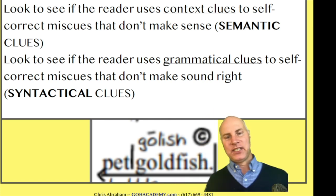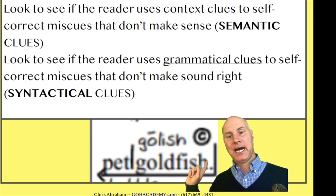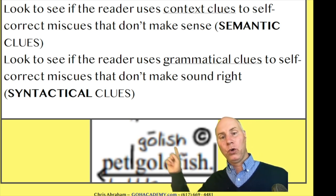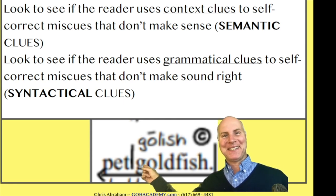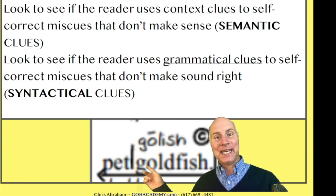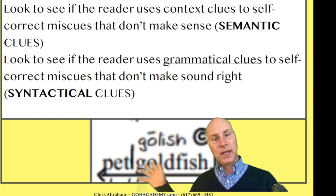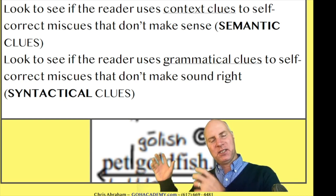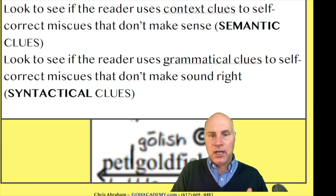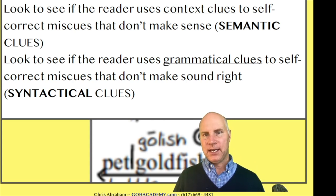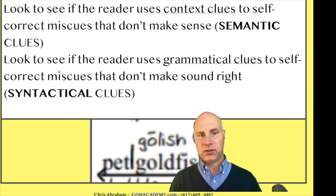In this sentence here, pet golish doesn't make any sense, but pet goldfish does. The word pet is our semantic context clue. Pet golish doesn't make sense, but pet goldfish does. So they use pet as a sort of hint to what this unknown word is. That's a semantic context clue.